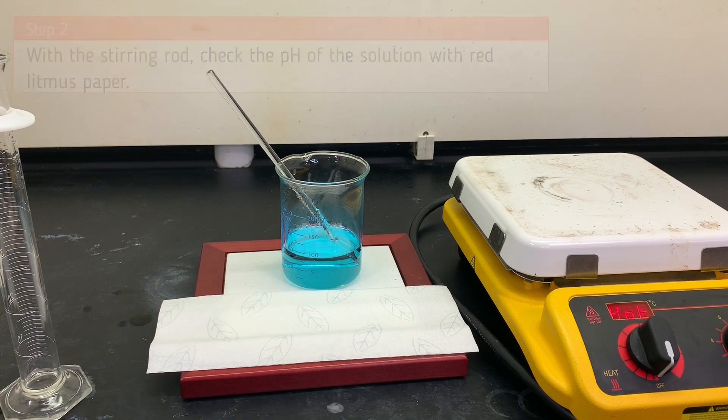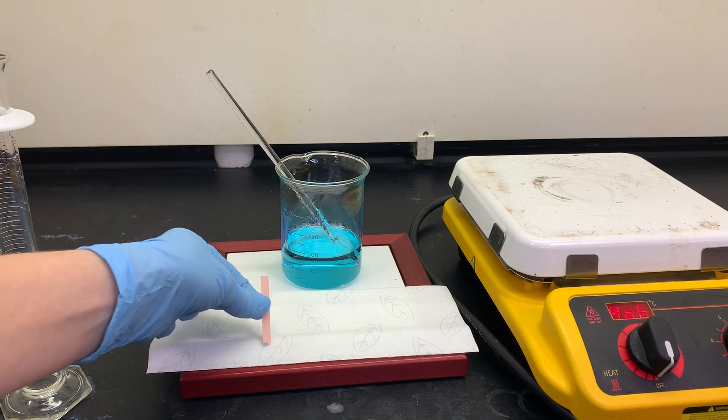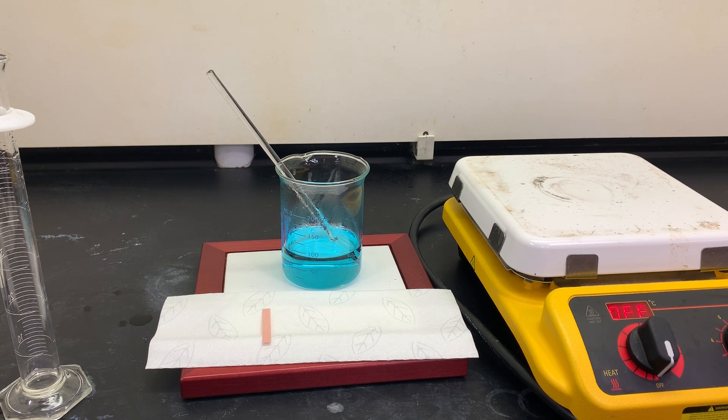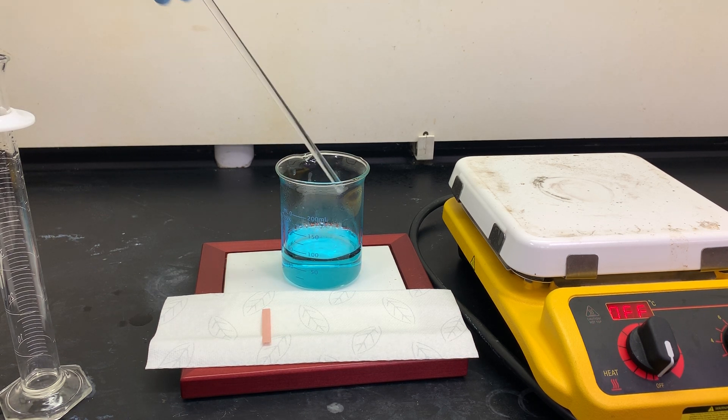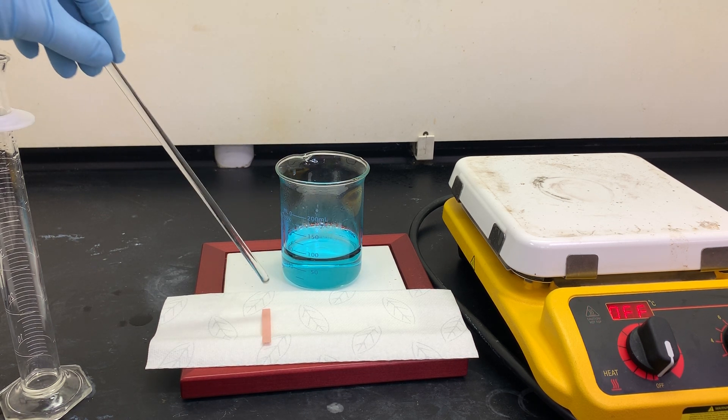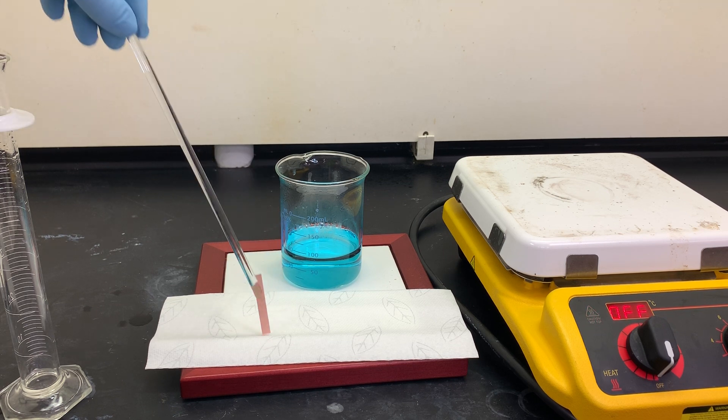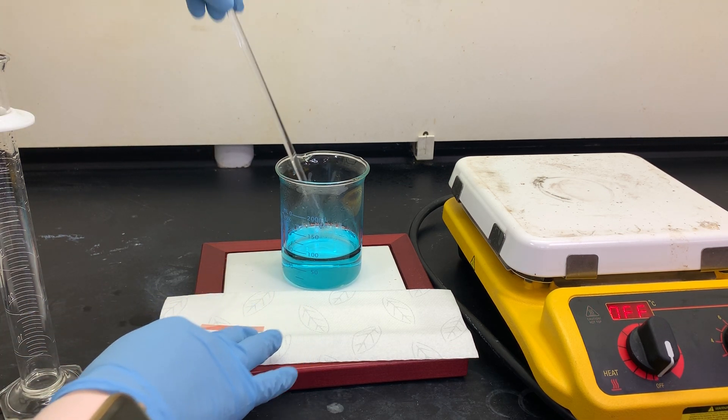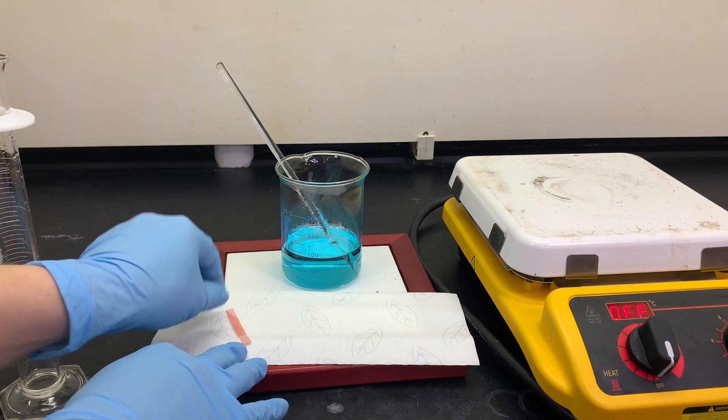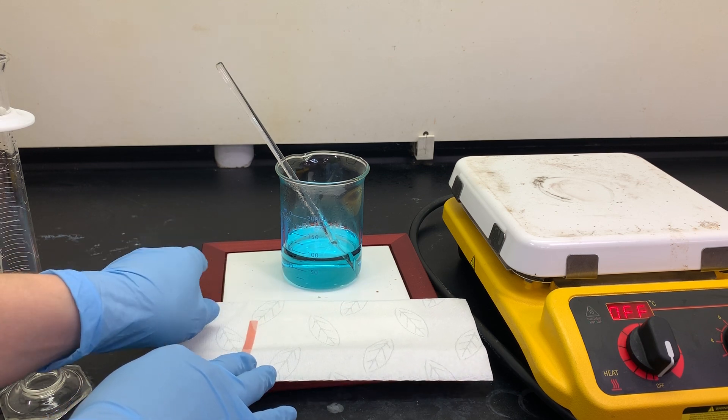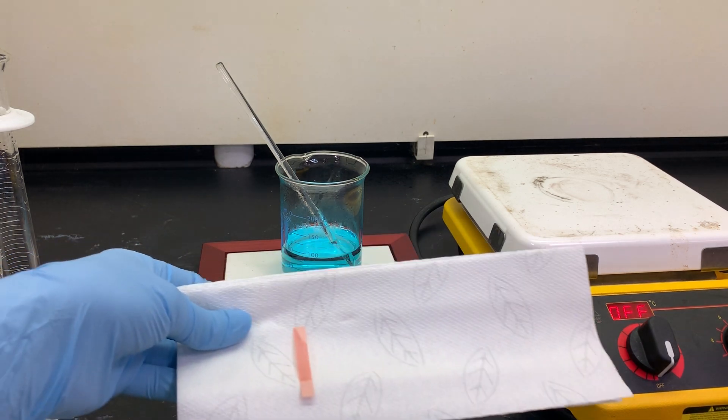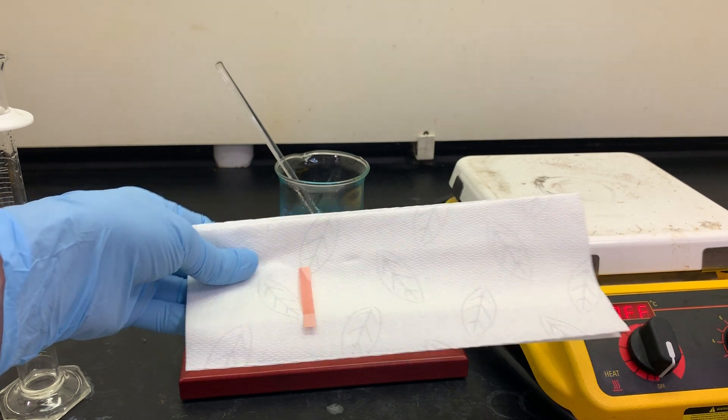Red litmus paper turns blue in a basic solution and stays red or pink in an acidic solution. What type of solution do we have here?